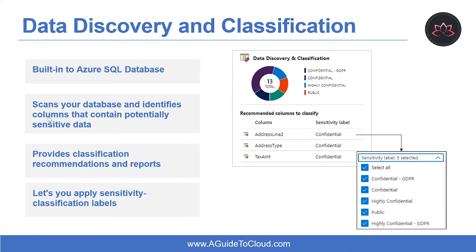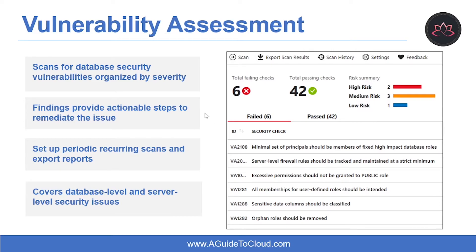Protecting data in transit should be an essential part of your data protection strategy. Because data is moving back and forth from many locations, Microsoft generally recommends that you always use SSL or TLS protocols to exchange data across different locations. In some circumstances, you might want to isolate the entire communication channel between your on-premises and cloud infrastructure using a VPN. SQL Vulnerability Assessment is an easy-to-configure service that can discover, track, and help you remediate potential database vulnerabilities. You can use it to proactively improve your database security. Vulnerability Assessment is part of the Advanced Data Security offering, which is a unified package for advanced SQL security capabilities, and can be accessed and managed via the central SQL advanced data security portal.